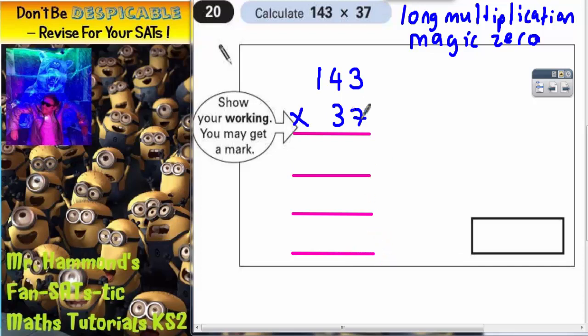Now first thing we're going to do is we're going to times the 143 by seven units. So we're going to do 7 times 3, 7 times 4, and 7 times 1 in that order, and we're going to write our answer on this top line.